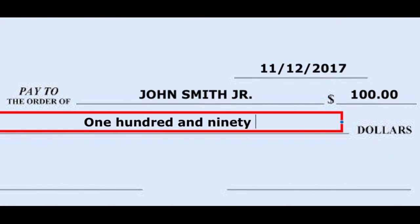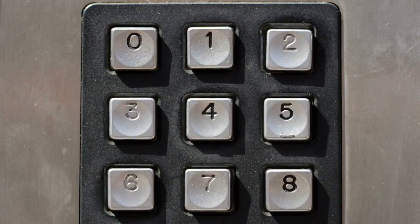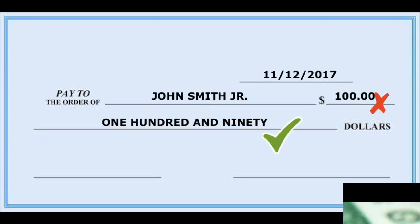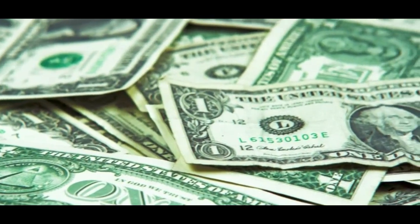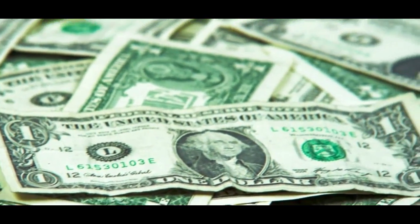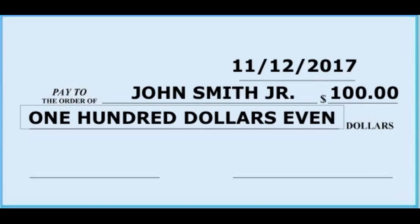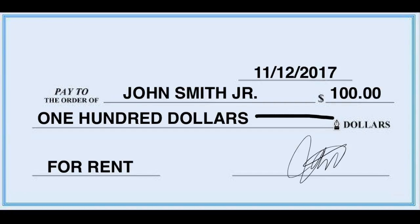If this happens, the amount of the check expressed in numbers will be disregarded. Instead, the amount expressed in words is going to be considered by banks as the correct value of the check. To avoid this from happening, write the word 'even' after putting the exact amount of the check in words. For example, $100 even. Another way is to write a line after the words $100 up to the end of the blank provided.